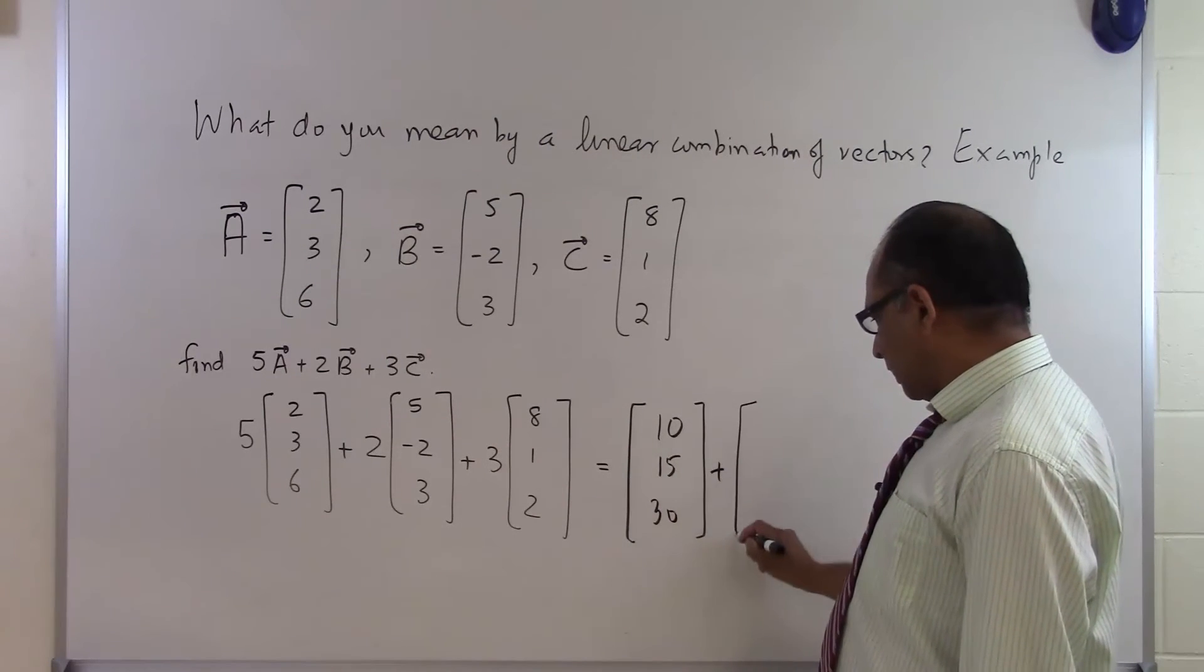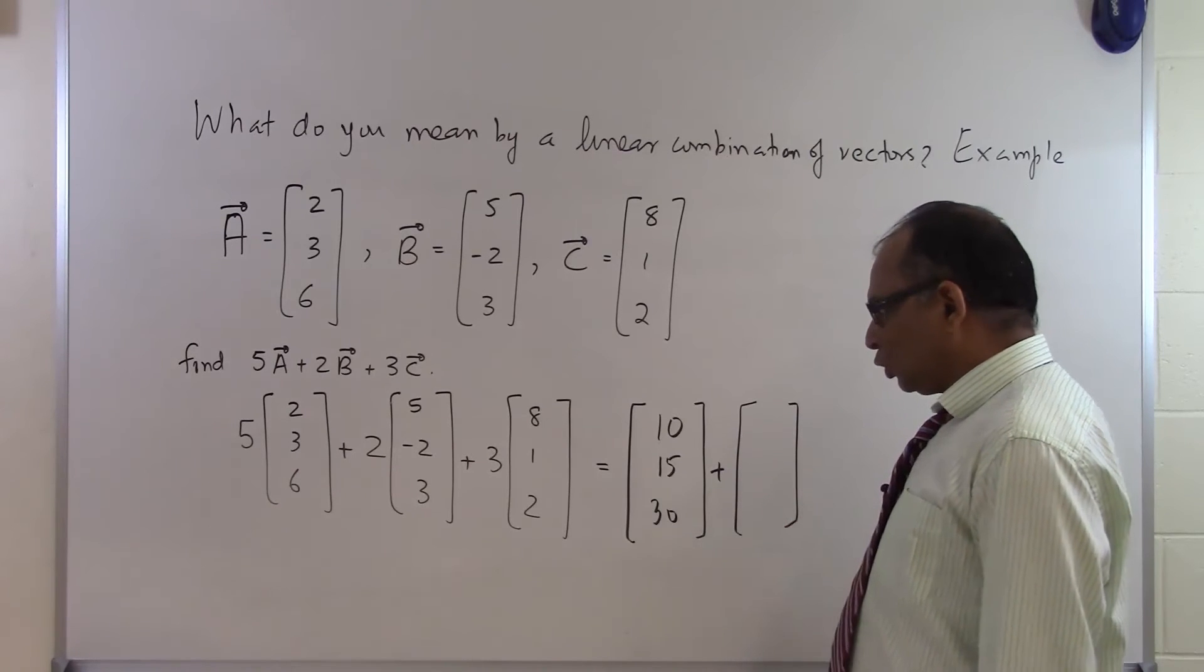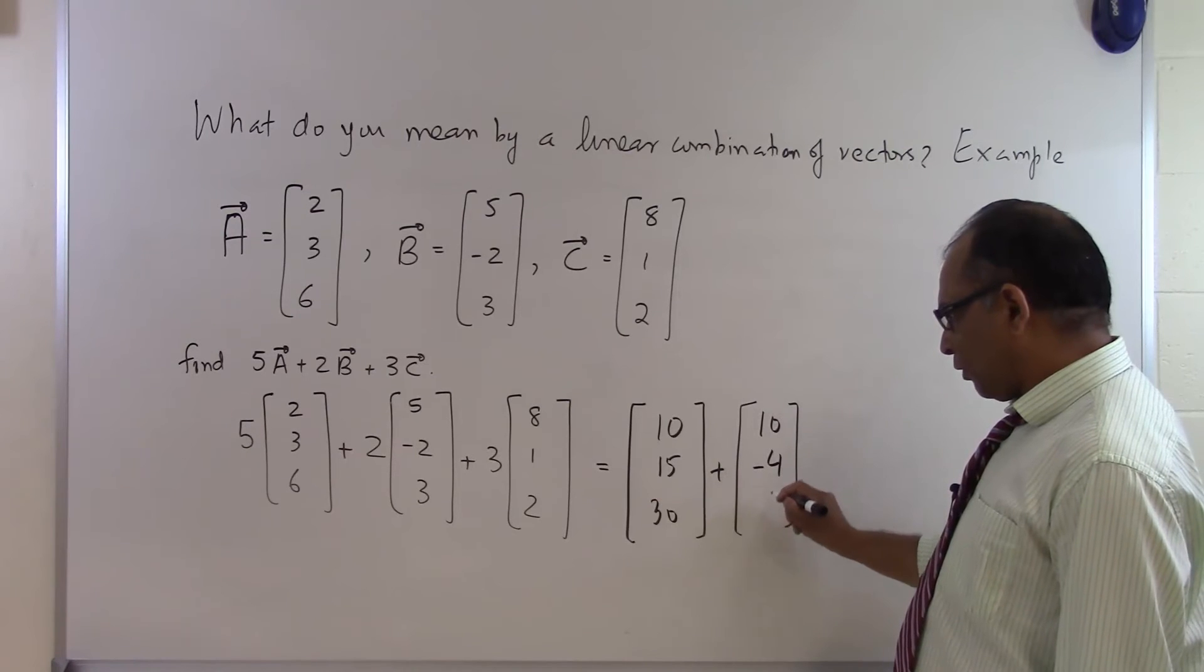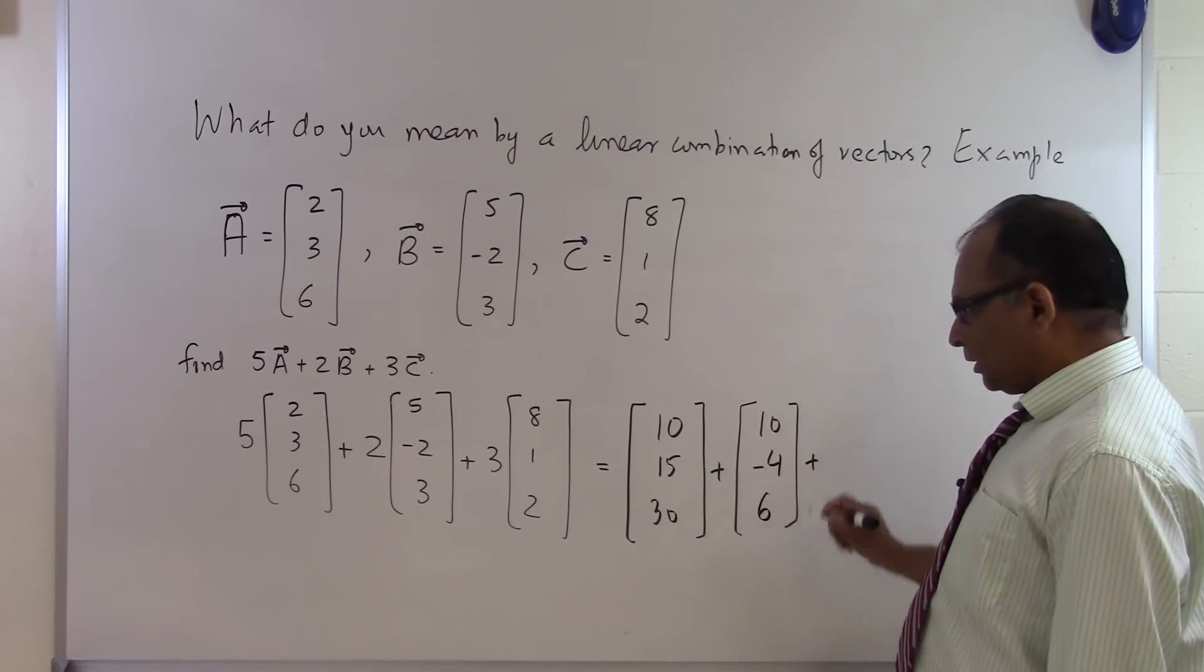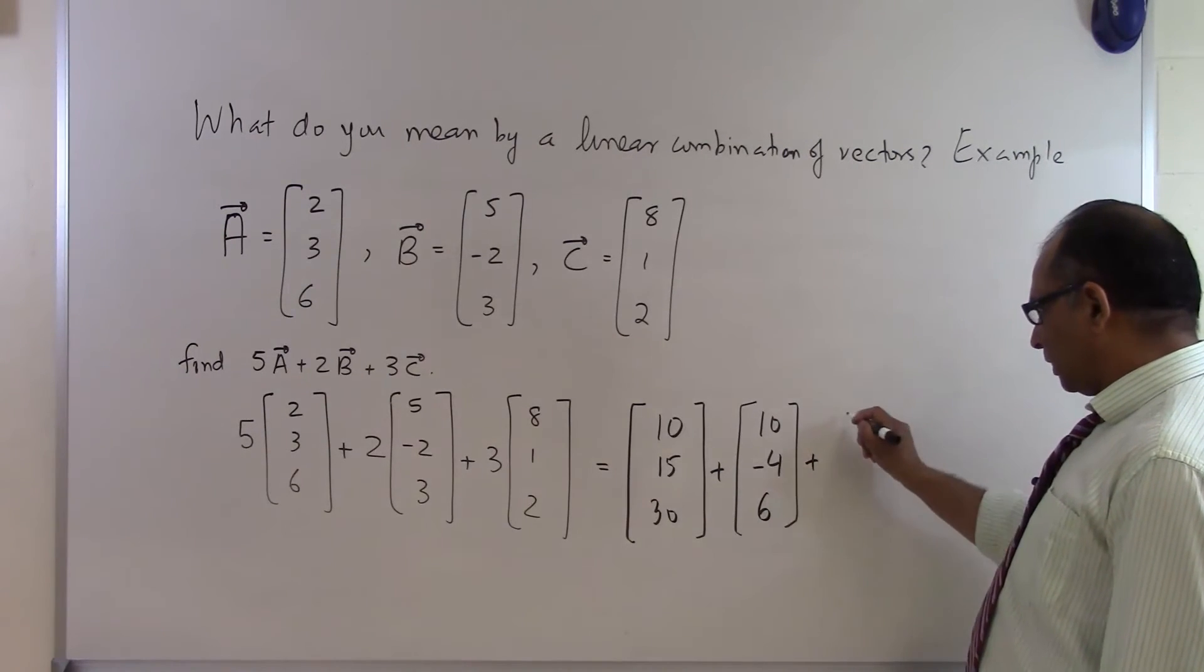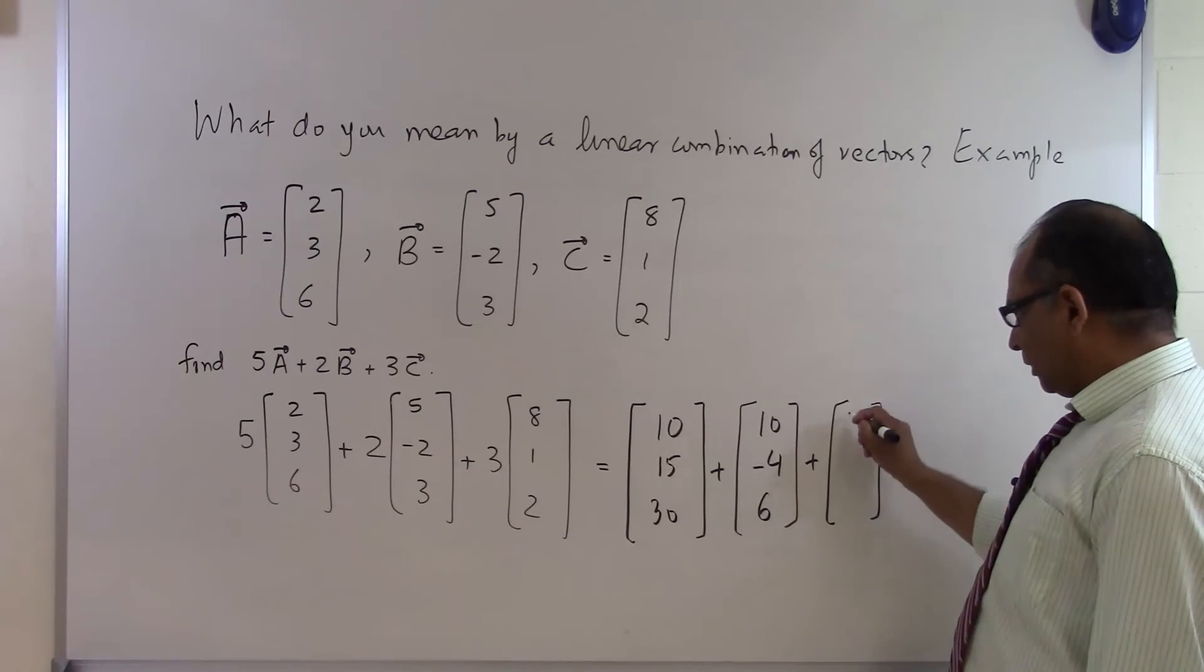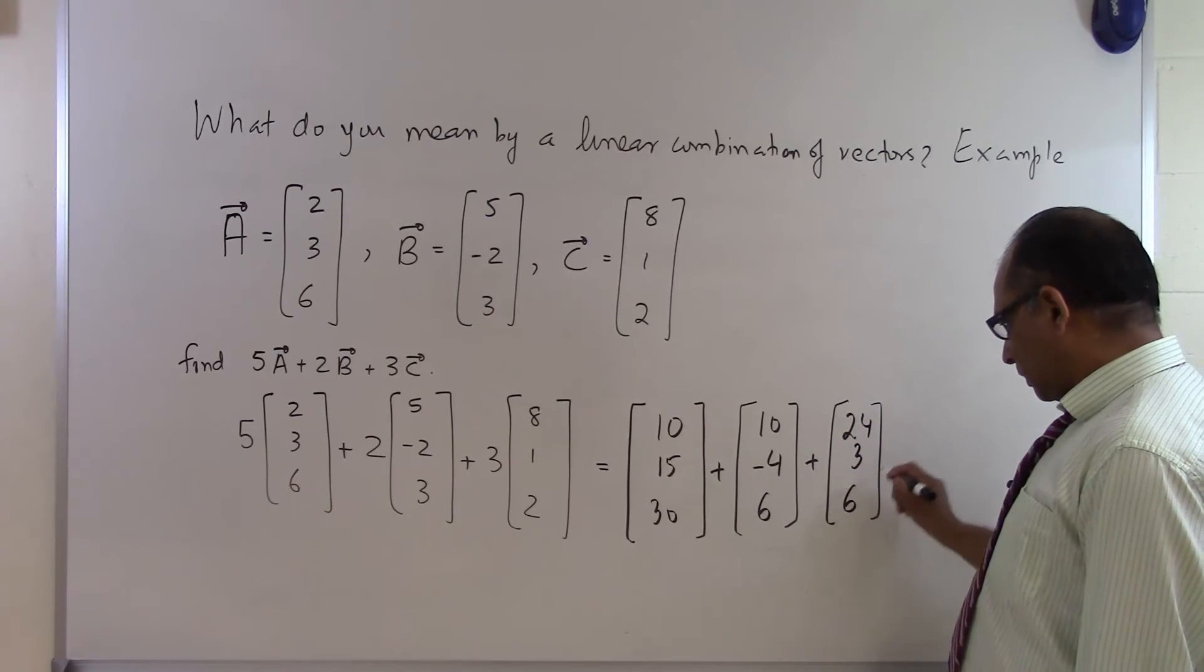The second vector which is 2 times B becomes 10, minus 4 and 6. And the third vector which is 3 times C, each component gets multiplied by 3, becomes 24, 3 and 6.